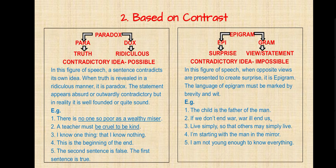Now epigram. The language of epigram must be marked by precision and wit. Examples: 'The child is the father of the man' — this is not possible, so it is called an epigram. 'If we don't end war, war will end us' — war always gives hazardous results. 'Live simply so that others may simply live' — you share your things so all get their share. 'I am starting with the man in the mirror' — meaning I am starting with myself. 'I am not young enough to know everything' — the person is not mature enough.